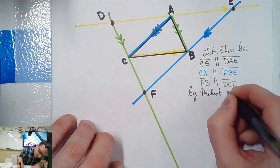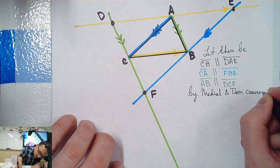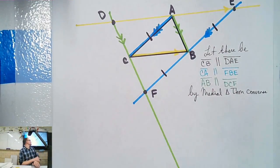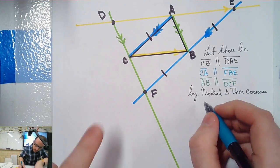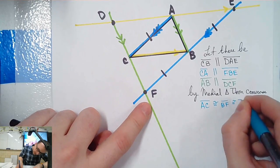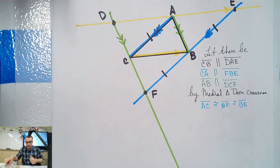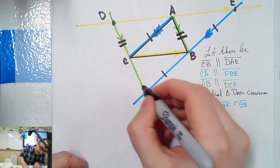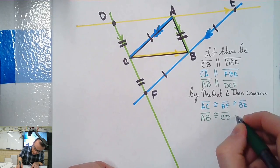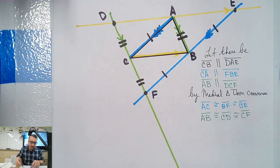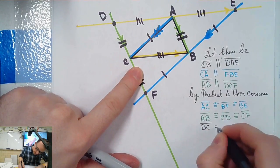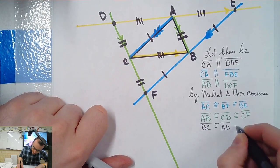By Medial Triangle Theorem converse: AC is congruent to FB and BE. I also know that AB is congruent to those two pieces — DC and CF. And lastly, BC is congruent to AD and AE. It's a lot of letters, but it's not hard — we do parallels, then we get all this for free. Now, remember what I did last time? I created some perpendiculars. So I'm going to create a perpendicular from B, because B is the midpoint. That looks like 90 — I made it 90.